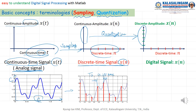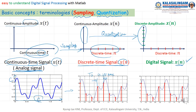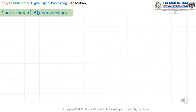We can convert continuous amplitude to discrete amplitude — we call this quantization. Quantization in amplitude. We call this a digital signal, X of n. Of course, this digital signal can be used in a computer.